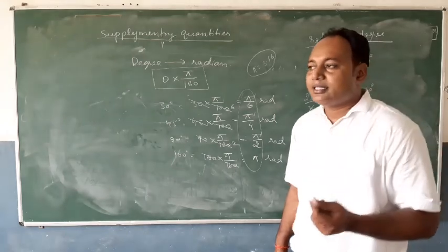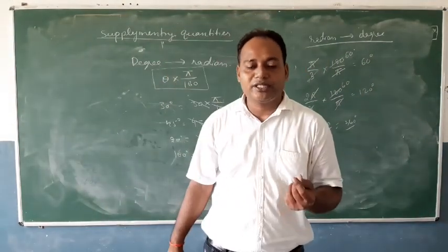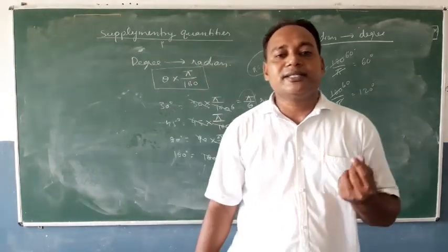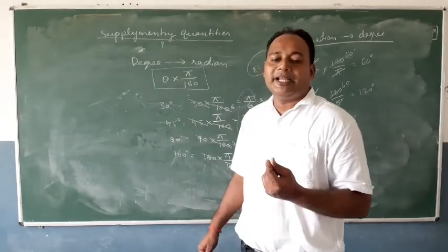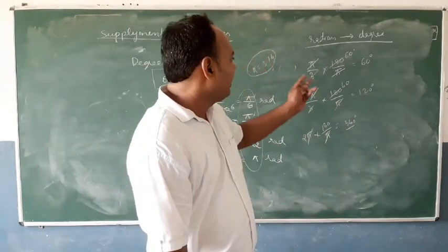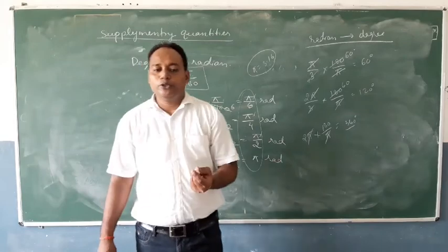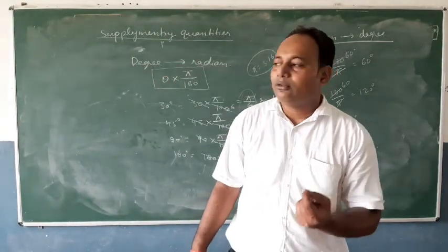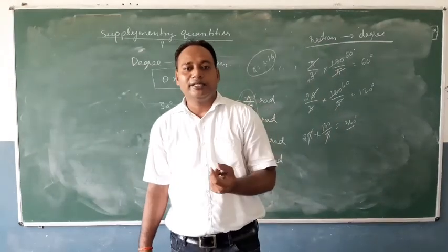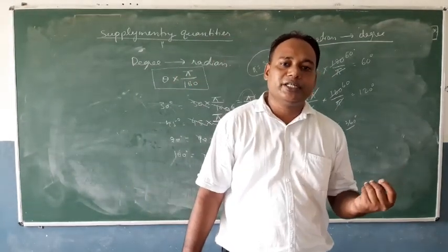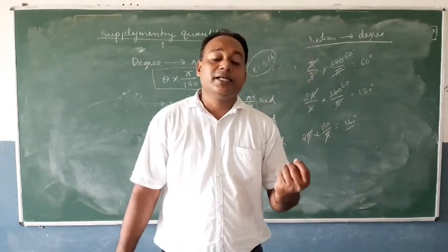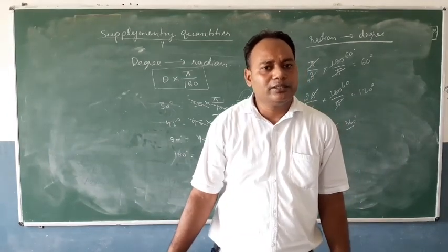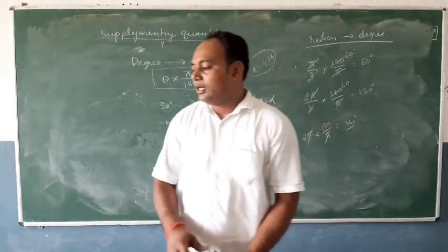So to summarize: the plane angle is a supplementary quantity defined as the angle between two lines, and its unit is the radian. To convert plane angle from degrees to radians, multiply by π/180. To convert from radians to degrees, multiply by 180/π.